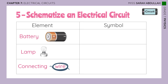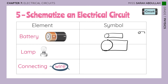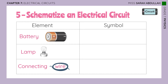Now I'm sure you're able to construct an electric circuit. But what if one person decided to draw the battery this way, another drew it differently, and someone else drew it another way? Your drawings might differ, making it hard to understand what you're trying to draw. This is why, to avoid these inconsistent sketches, scientists came up with a way of representing the components of an electric circuit with special symbols.